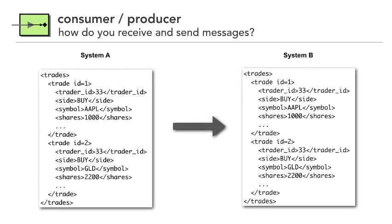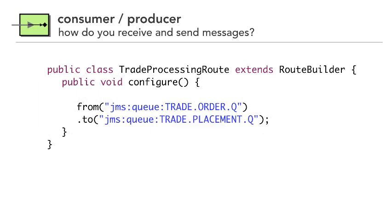Graphically, we have our XML basket of trades with multiple trades — trade ID 1, trader 33, a buy for Apple, 1,000 shares, and another trade for trader 33, a buy for gold for 2,200 shares. System B receives this exact contract. If we look at the code to do this, it really is one line of code using the DSL. In Camel, we have a trade processing route which extends RouteBuilder, and we override configure to say: from the trade order queue to a JMS queue called trade placement.